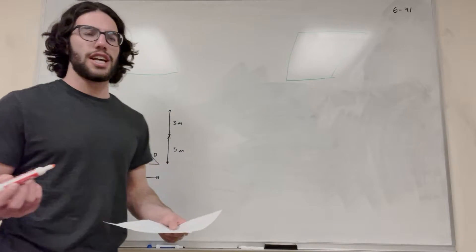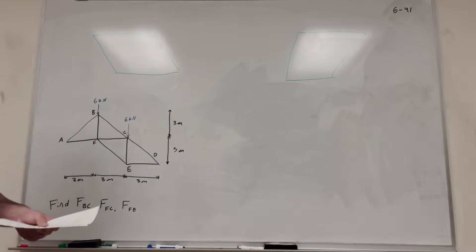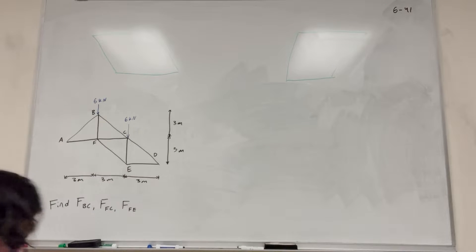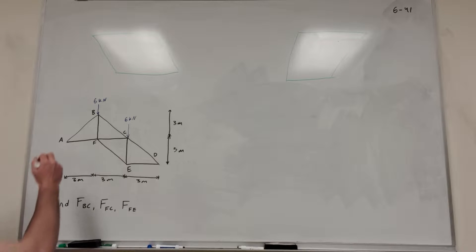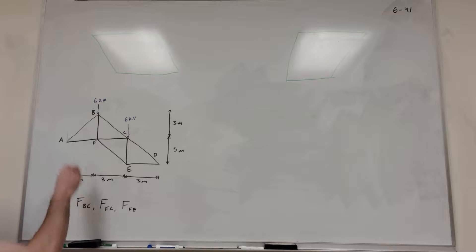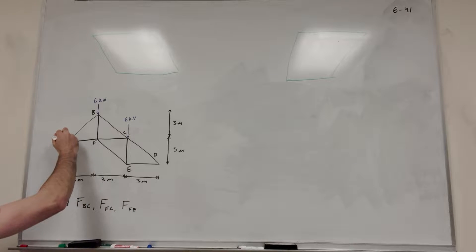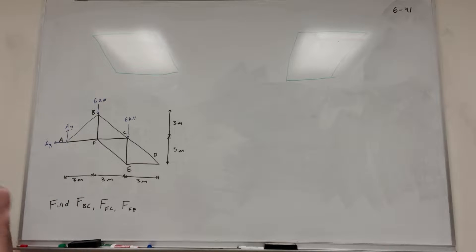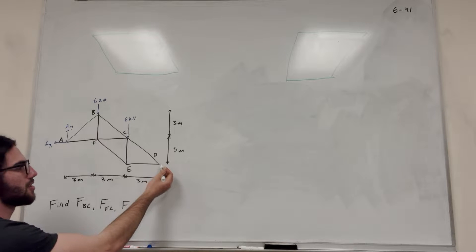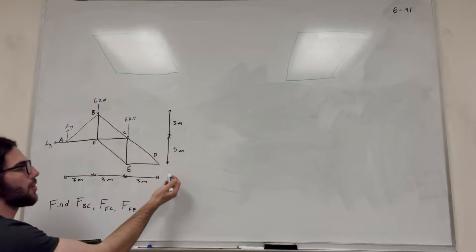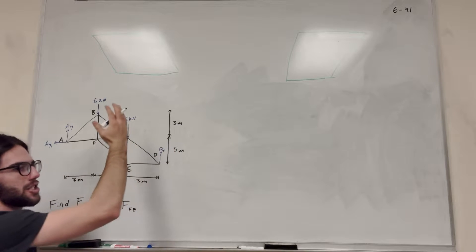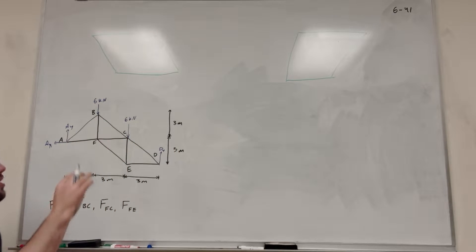In our free body diagram, point A is a pin and point D is a roller. If you have a pin, there's going to be force A of Y and A of X. A roller has only one unknown, whereas a pin has two. So this is going to be D of Y, because it only pushes up. It doesn't restrict movement in X, whereas pin A does.